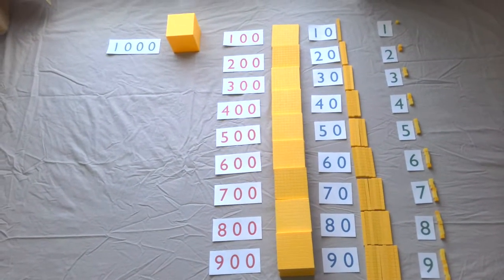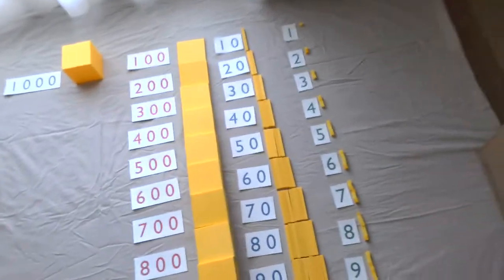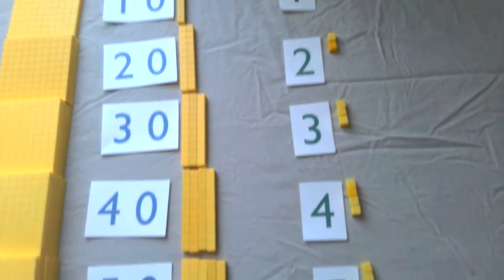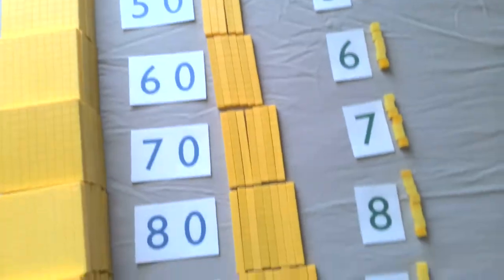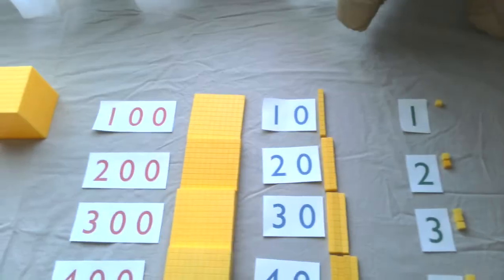This is called the bird's eye view and it's all laid out with the number cards. You can see each quantity. Now this is something you would want to build with your students.